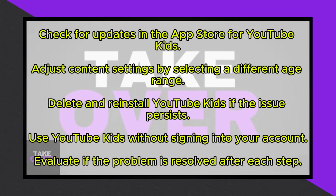Now let's tackle the first solution, which involves adjusting the content settings. Launch YouTube Kids and locate the privacy section by clicking on the lock icon. Input your passcode and proceed. Within the settings, navigate to the kid account under My Kids. Enter your password again and click on Edit Settings. Here, select an age range other than approved content only. This adjustment may address the issue. Once done, evaluate if the problem persists.